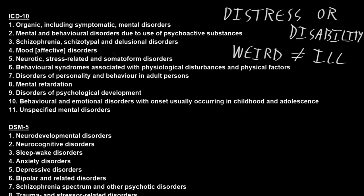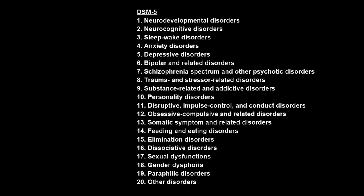To give a very superficial overview of the types of mental disorders, I'll go through some of the top-level categories. There are two main systems currently in use to categorize mental disorders: the ICD-10 from the World Health Organization, and the DSM-5 from the American Psychiatric Association. I'll go through the categories of the DSM-5, which has 20 top-level categories, though there would be a lot of similarities between the two systems.